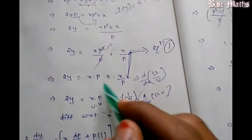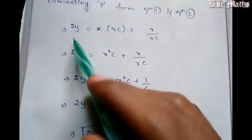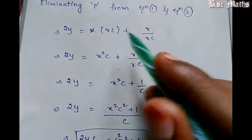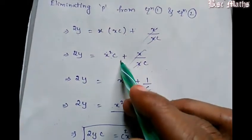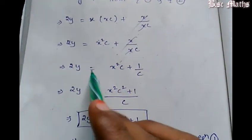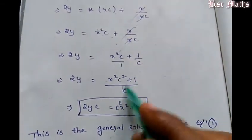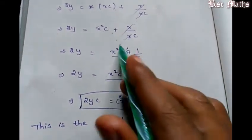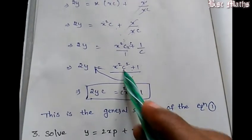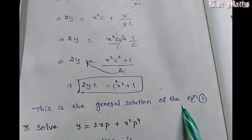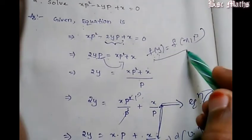Substituting p equals Cx into equation number 1: 2y equals x into Cx plus x by Cx. X cancels: 2y equals x squared C plus 1 by C. So the general solution is 2y equals Cx squared plus 1 by C.